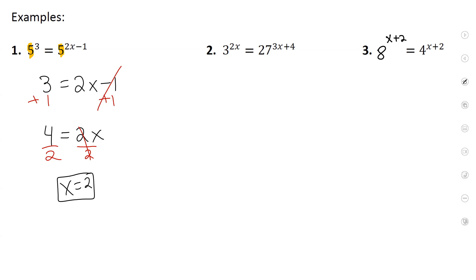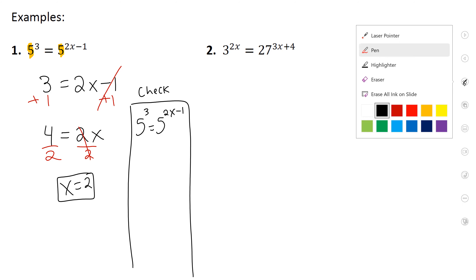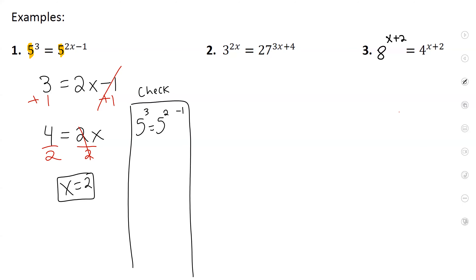If you solved, you should have gotten x equals two. Step four: check your work. Plug two back into the original problem: five cubed equals five to the two x minus one. Replace x with two: two times two minus one equals three. So five cubed equals five cubed — that's a true statement, confirming our answer.